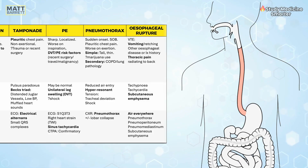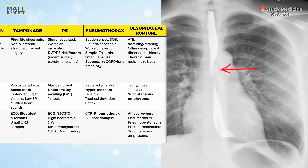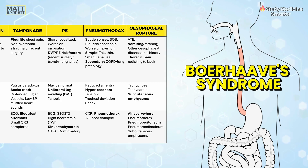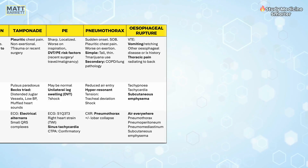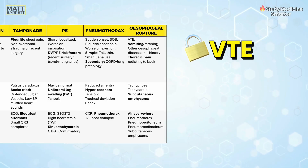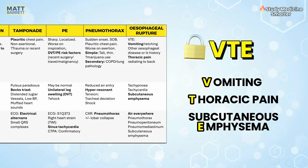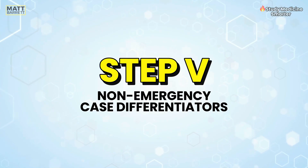Moving on to the oesophagus — an oesophageal rupture is life-threatening. A tear allows GI contents to enter the mediastinum, which can cause overwhelming inflammation. Oesophageal rupture is called Boerhaave syndrome and it typically happens in the context of prolonged vomiting, which greatly increases oesophageal pressure. Just remember VTE: vomiting, thoracic chest pain and subcutaneous emphysema — that's where you can feel air bubbles under the skin crackling under your fingers.